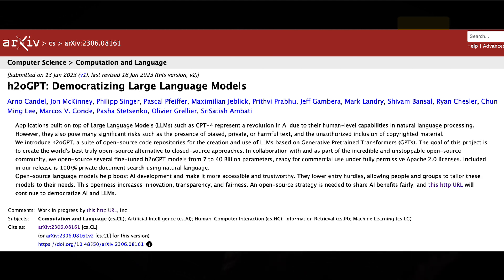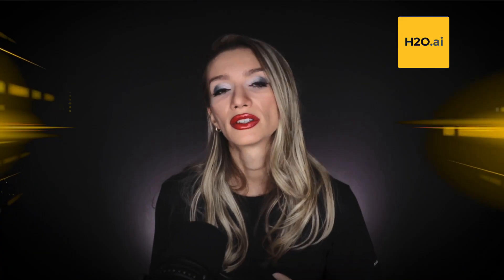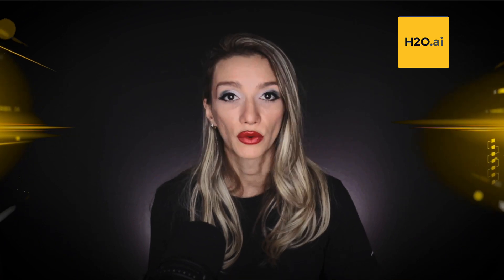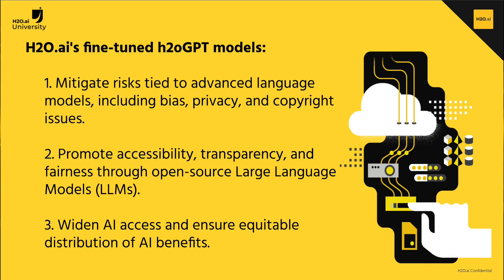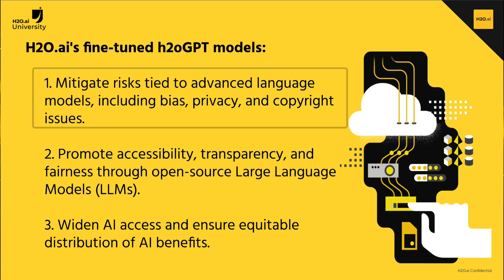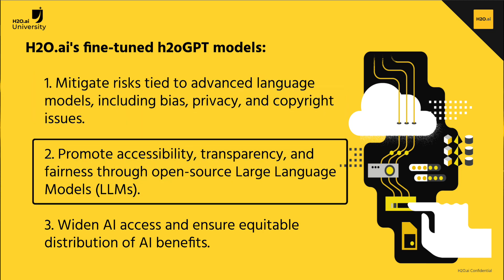Capabilities from H2O GPT include offering fine-tuned LLM models with parameter counts ranging from 7 to 40 billion, all licensed permissively. These models are crafted to address the challenges and risks associated with advanced language models such as GPT-4, including issues related to bias, privacy, and copyright. The use of open-source LLMs fosters accessibility, transparency, and fairness in the realm of AI development.